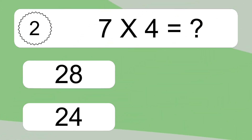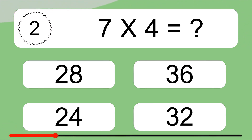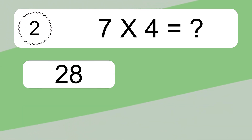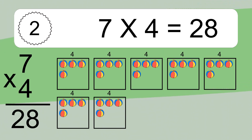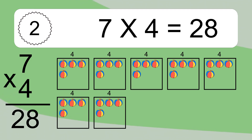Seven times four equals what? Seven times four equals 28. We have seven boxes and each box has four colorful balls inside. If you count all the balls in all the boxes together, you will have seven times four balls. This equals 28 balls.